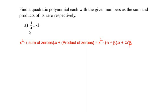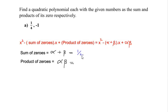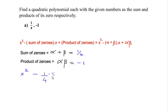Now let us assume that the sum of the zeros is 1/4 and the product of the zeros, which is αβ, is -1. Substituting the values of sum of zeros and product of zeros in the general form we get x² minus (1/4)x plus (-1).